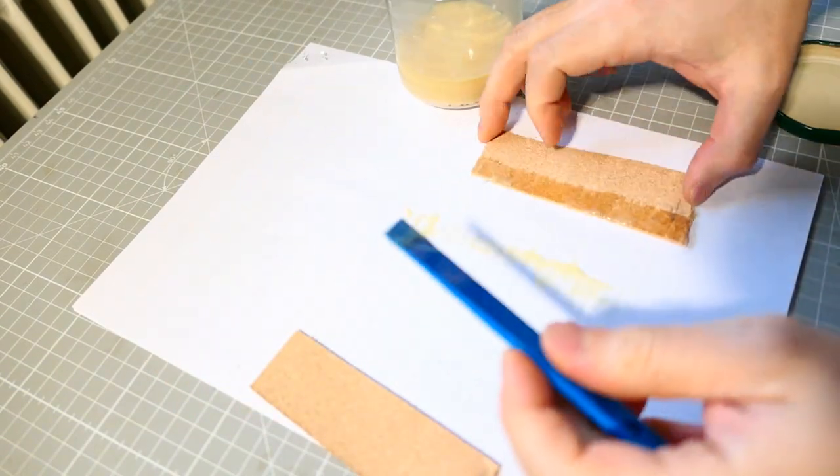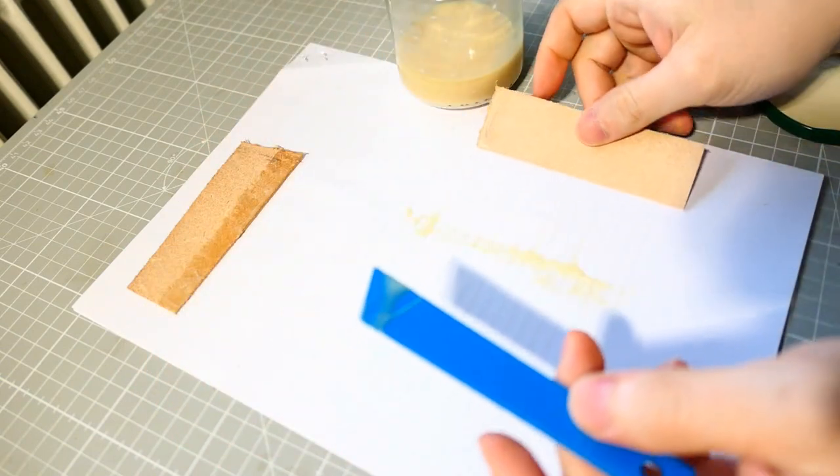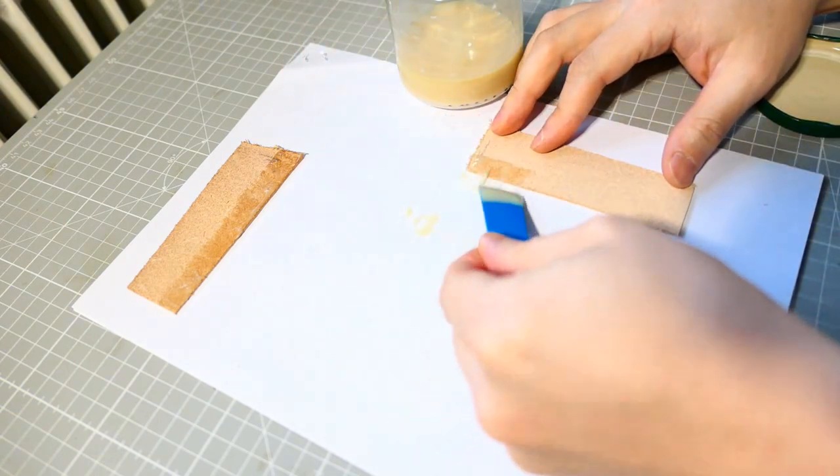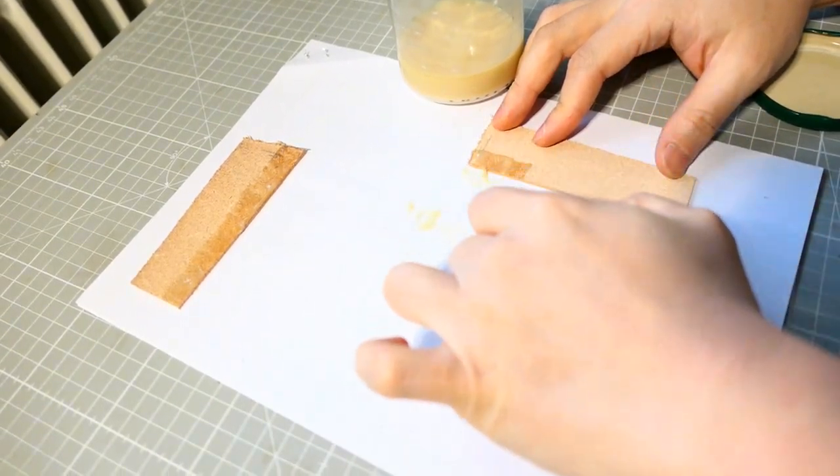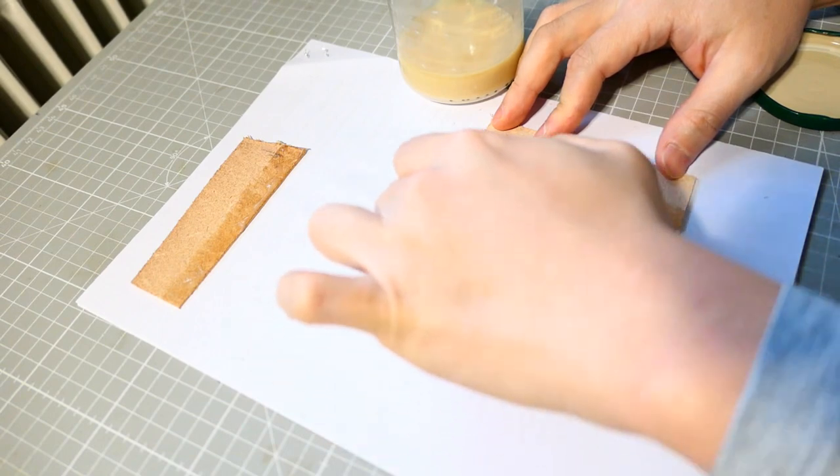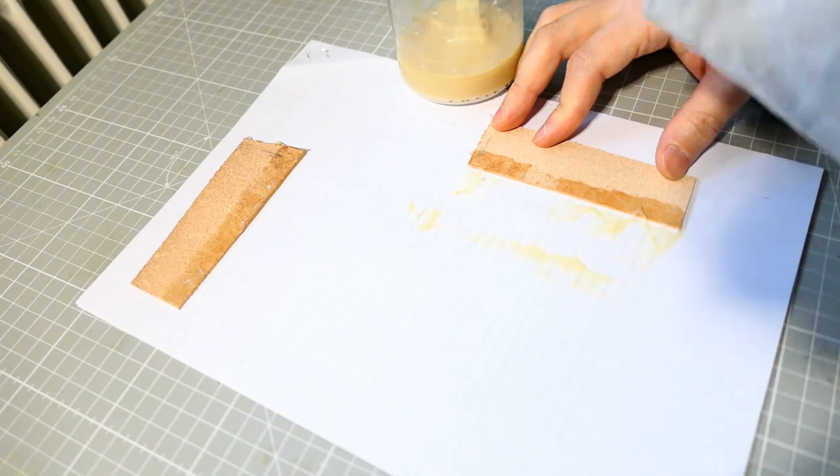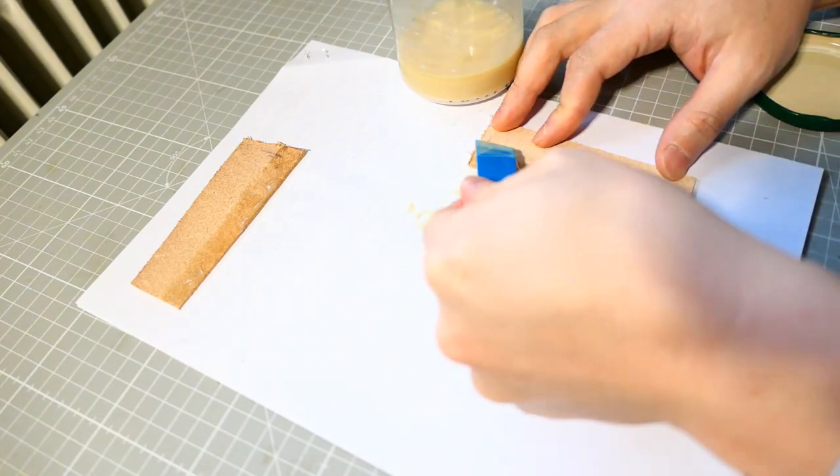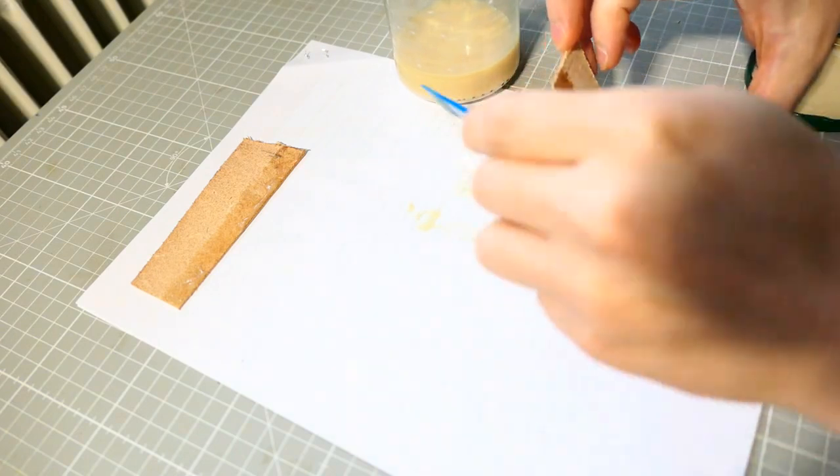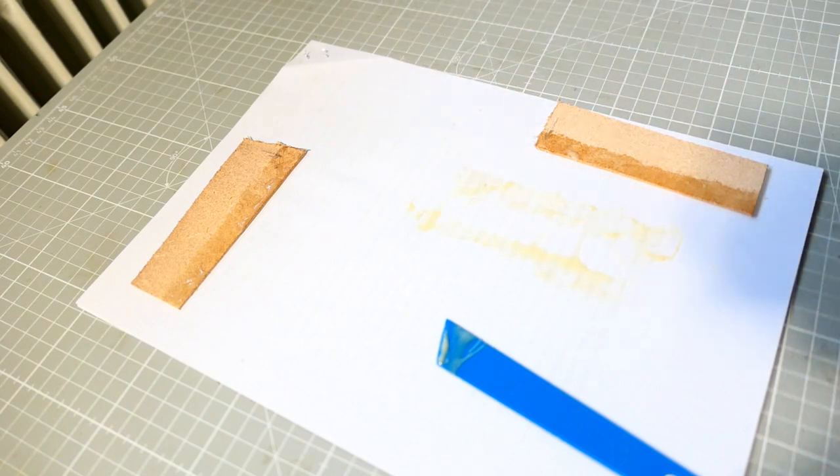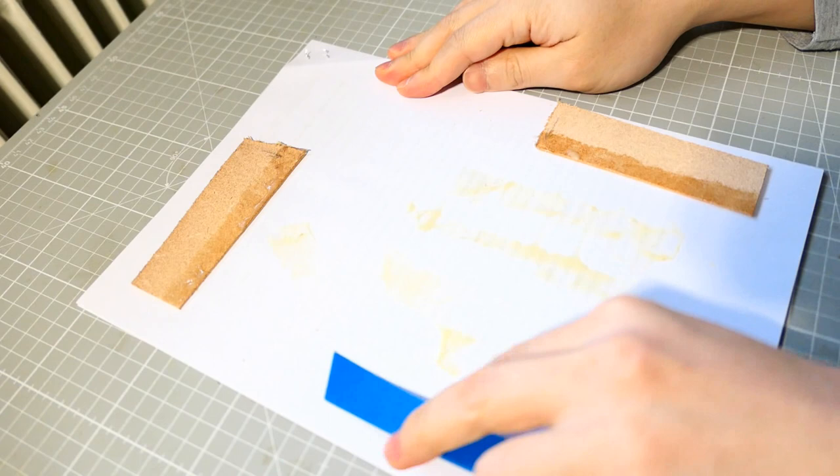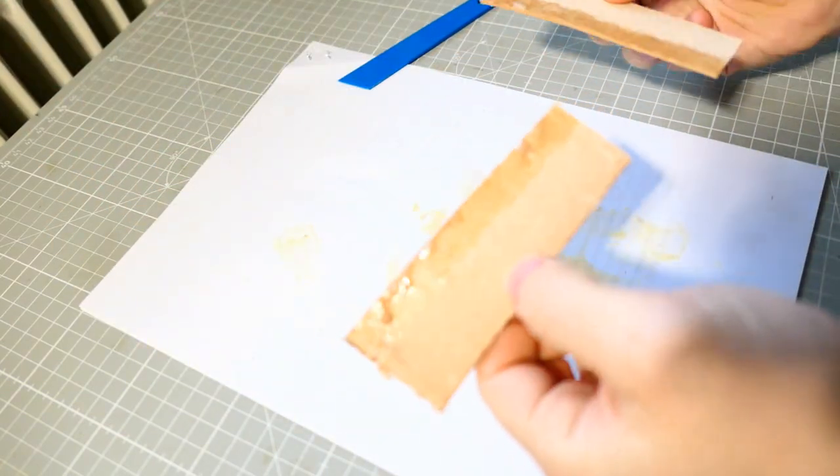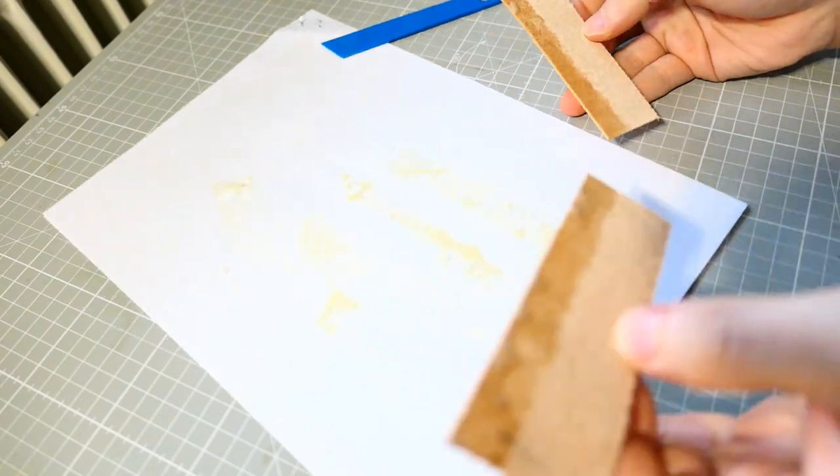I wound it like this, and also this side. I'll glue these two pieces of leather. I'll dry them a little bit. Then we'll glue them.